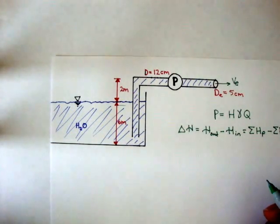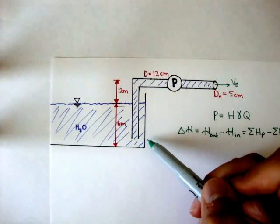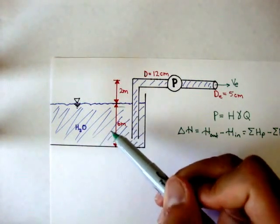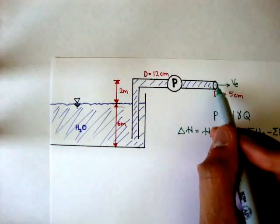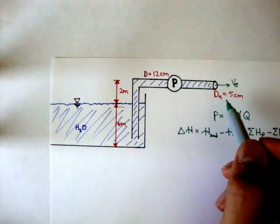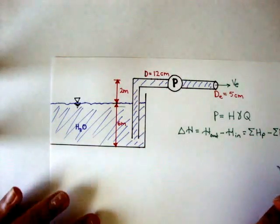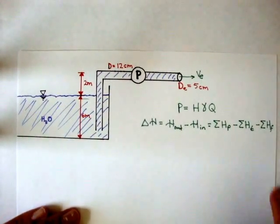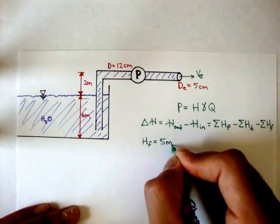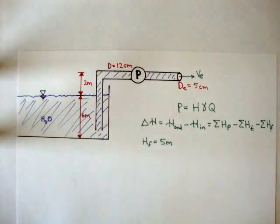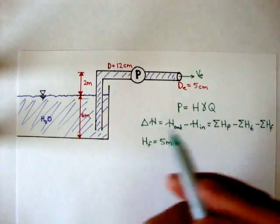The question: when the pump draws 220 meters cubed per hour of water at 20 degrees Celsius from the reservoir, the total friction head loss is five meters. The flow discharges through a nozzle to the atmosphere, and we want to estimate the pump power in kilowatts delivered to the water. The total friction head loss being five meters means HF equals five meters — that is the summation of all head losses, and in our case they only gave us one.